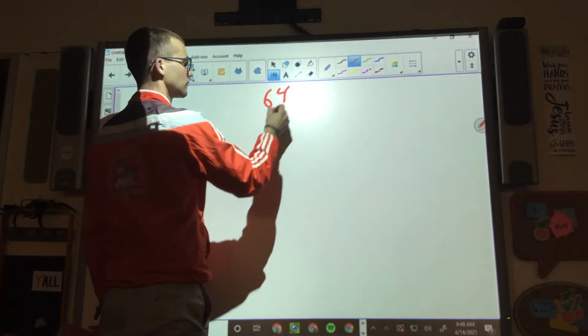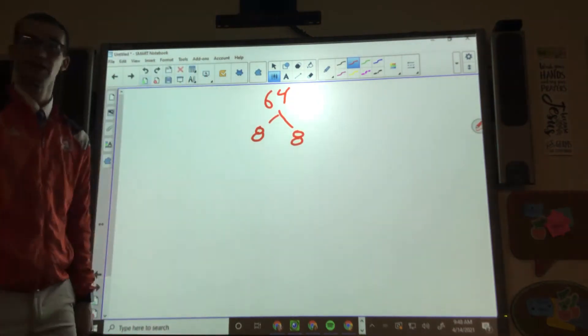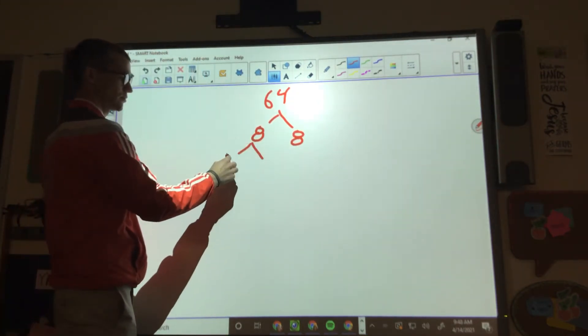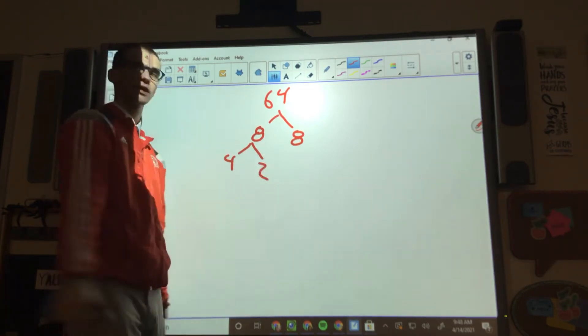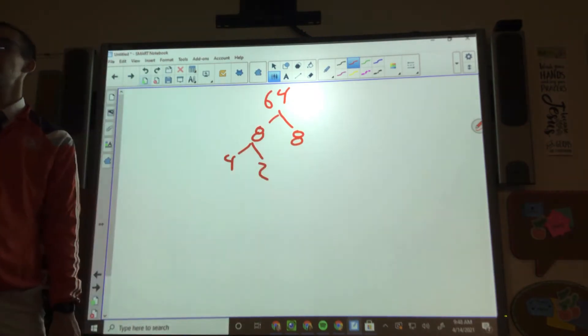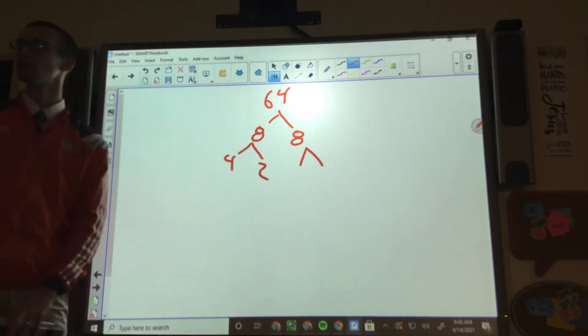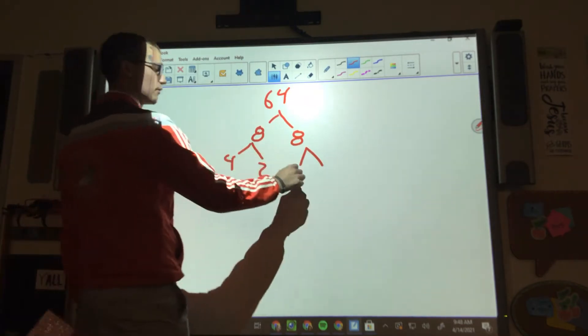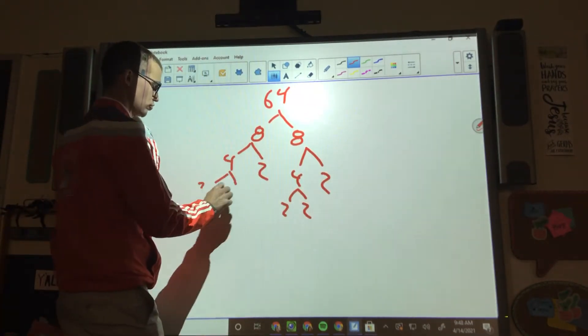For 64 then, it does break down into eight and eight at first, like he said. Next it breaks down into? Four. And? Four. Nope. Four and two. Four times four is? 16. Four plus four is eight. We are not doing addition. We are doing multiplication. Four times two again. Two and two. Two and two.